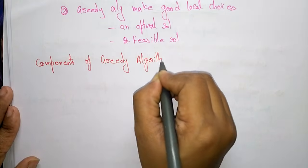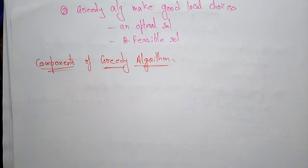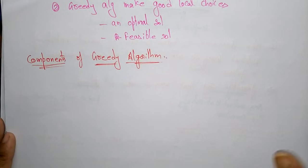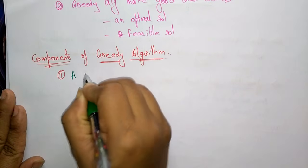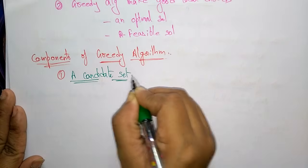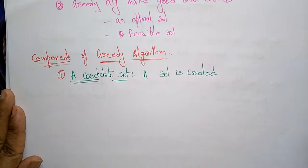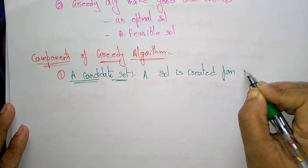This video provides an overview of the greedy algorithm — what it contains and what it mainly bases on. It selects a solution that thinks about the present, not the future, taking the best value related to the current state. The first component of the greedy algorithm is the Candidate Set. A solution is created from this candidate set.